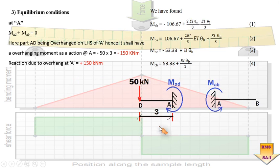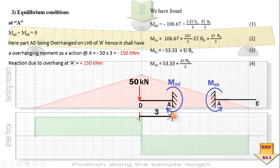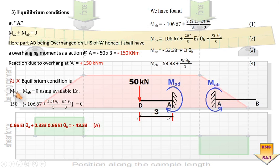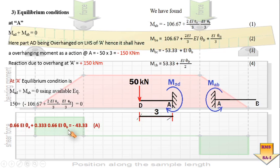Since the action is a moment of minus 50 × 3 about point A (anticlockwise), the reaction must be equal and opposite (clockwise). Applying the equilibrium condition at joint A: MAD plus MAB equals zero. MAD has already been found as plus 150 kN·m, and MAB is given by equation number one. Substituting the value of MAD into the equilibrium equation along with equation one gives a new equation in terms of theta A and theta B.